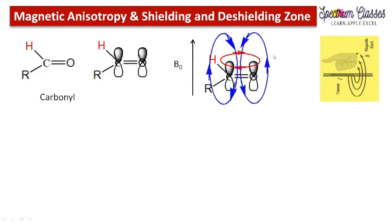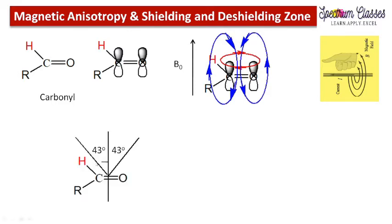If somehow a proton is present above or below the carbonyl group, the direction of the induced magnetic field lines is in the downward direction, while B0 is in the upward direction — so this decreases the net magnetic field. If the proton experiences less magnetic field, it resonates at a lower frequency, that is, a lower chemical shift value. That is why we call this region the shielding zone.